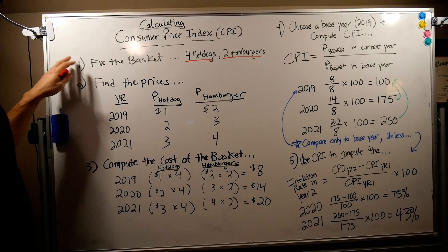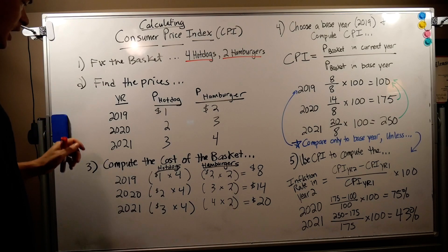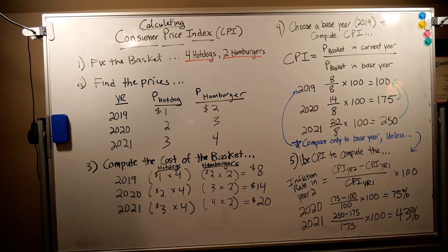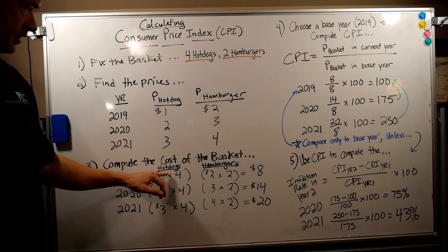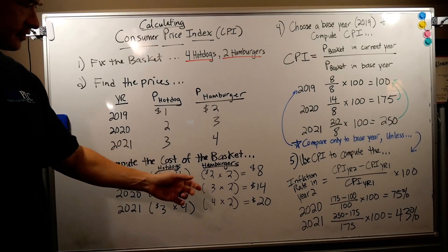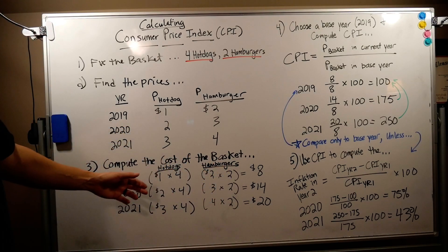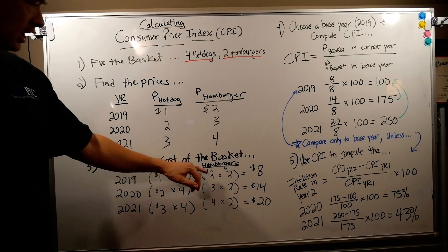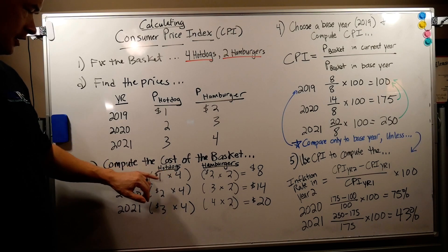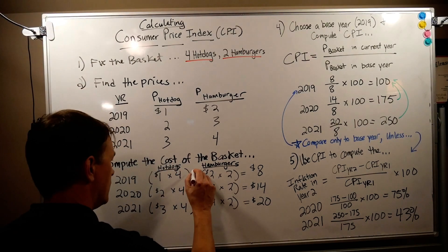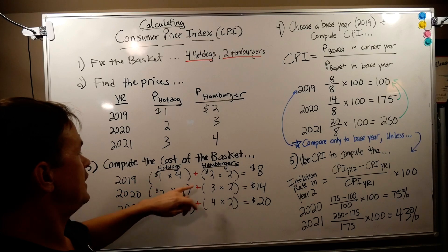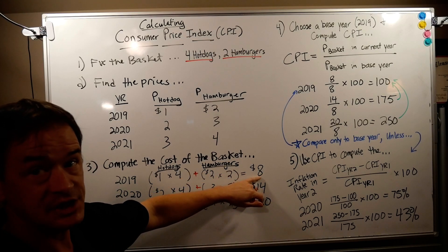So we've figured out what's on our list, we've gathered our prices, and we're computing the cost of the basket now. That's very simple, we're just going to the checkout and ringing it up. We're buying hot dogs in a quantity of four each year and hamburgers we're getting two each year. The prices of hot dogs go from one to two to three, hamburgers go from two to three to four. So 2019 let's check out. We're getting four hot dogs at $1 a piece and two hamburgers at $2 a piece. Our cost of our basket at checkout is $8.